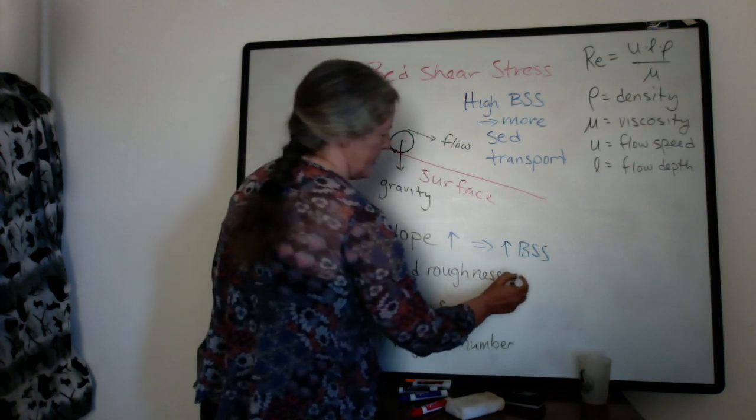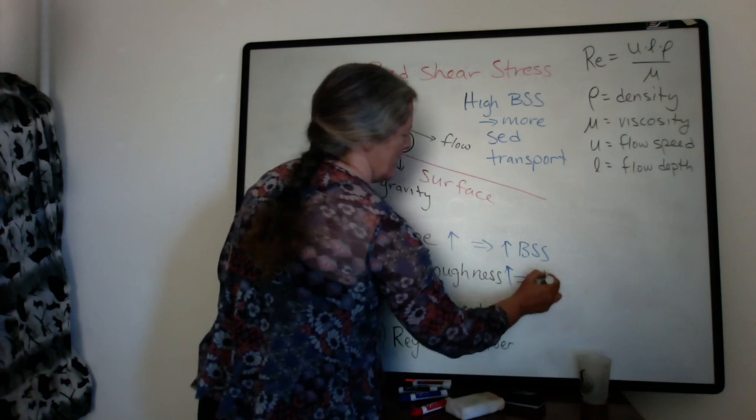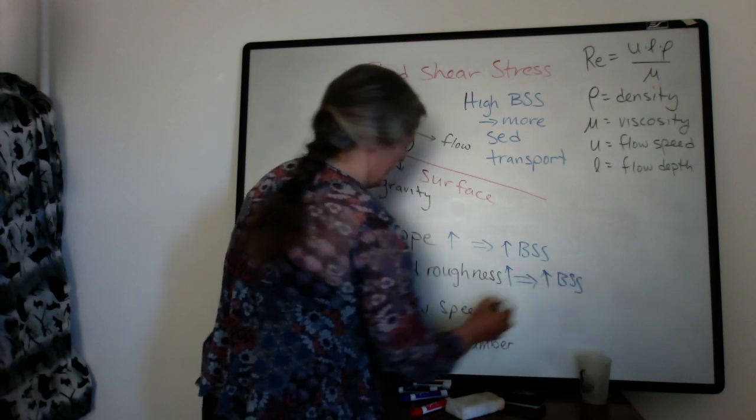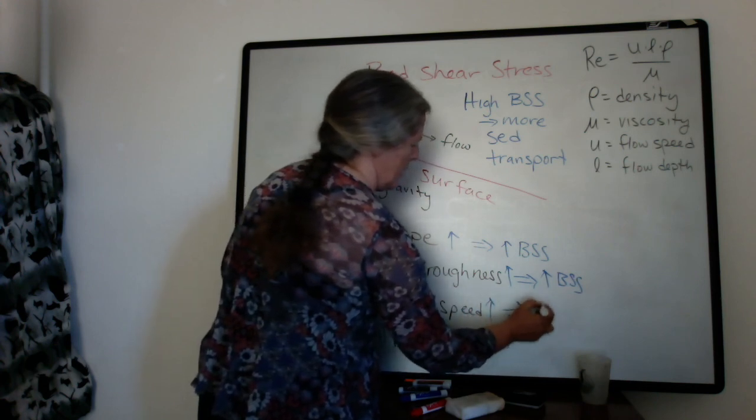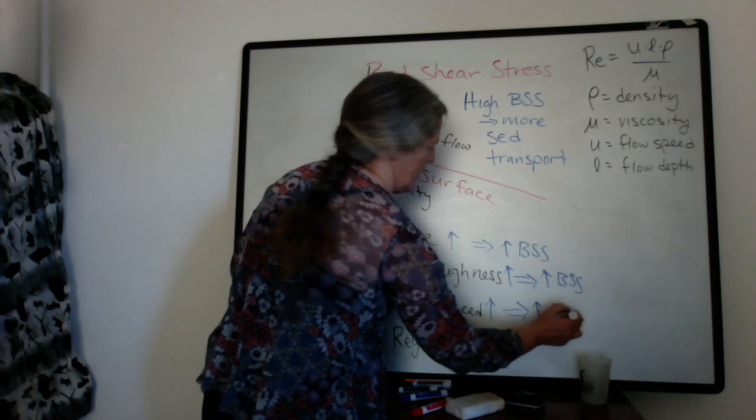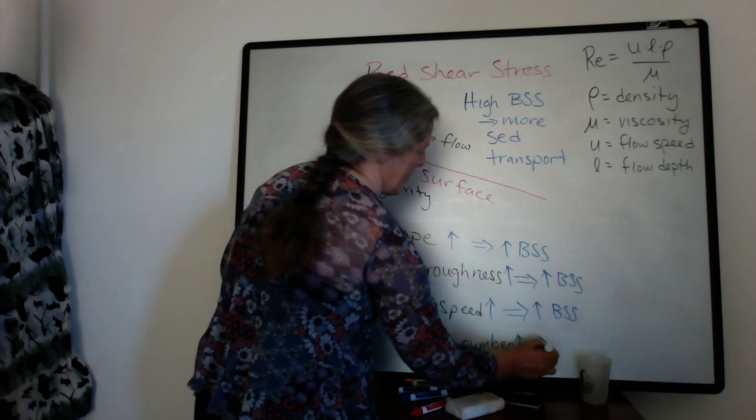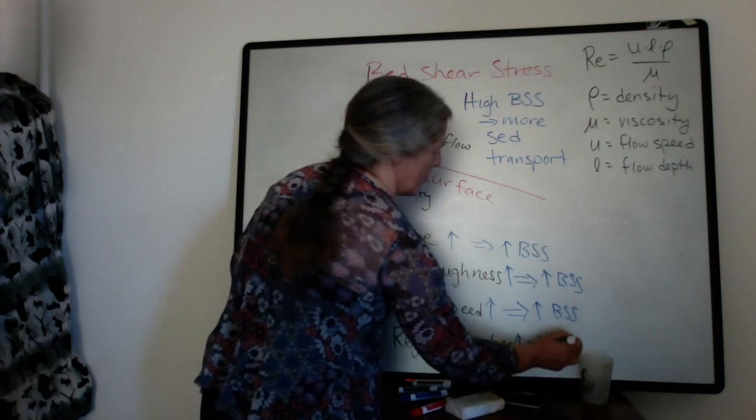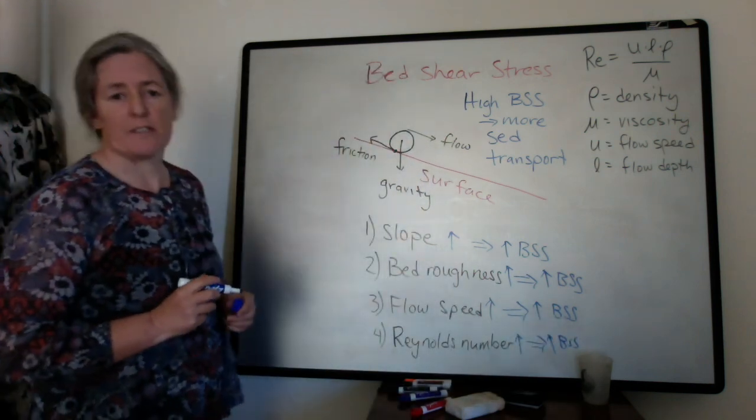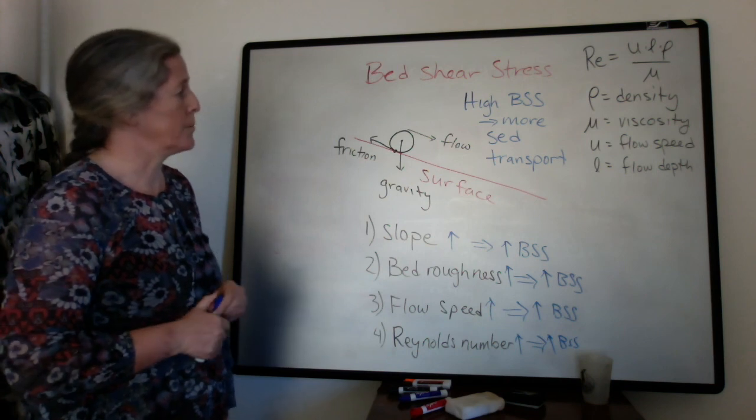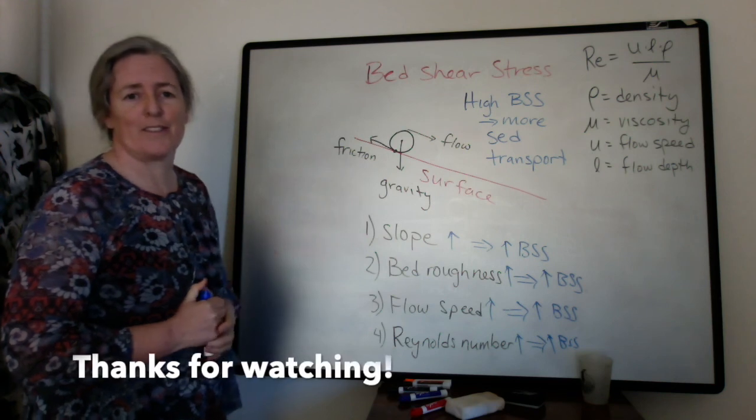Increasing bed roughness increases the turbulence. So it also causes an increase in the bed shear stress. Same with the flow speed. And the same with the Reynolds number. So the bed shear stress is a useful concept for understanding how the fluid and surface characteristics influence sediment transport.